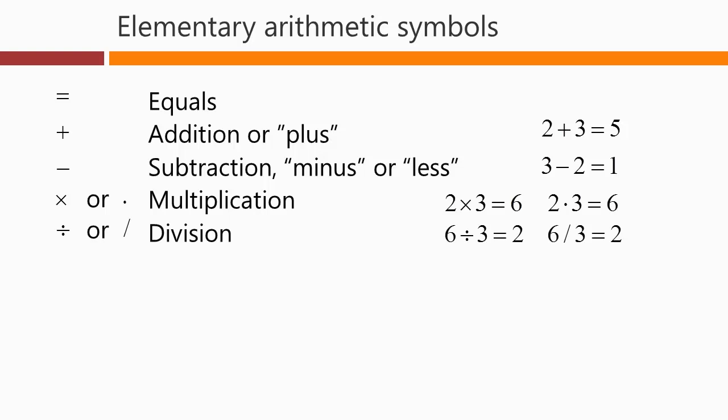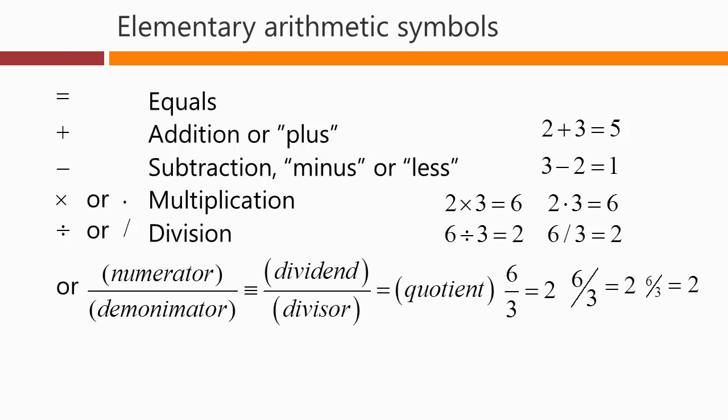For division, we have several different symbols. When we write numbers divided by one another in line, we might use the horizontal line with a couple of dots, or the slash sign here. So we could have 6 divided by 3 equals 2, or 6 divided by 3 equals 2 with the slash notation. And then quite often, in fact mostly in algebra, we may use this explicit notation with a numerator on the top and a denominator on the bottom. Sometimes that's called a dividend on the top and a divisor on the bottom. And that whole thing can be called the quotient.